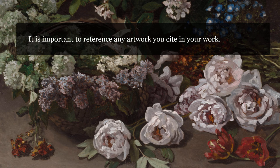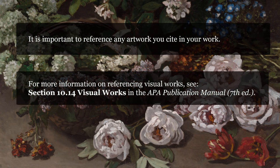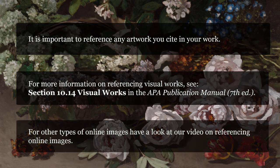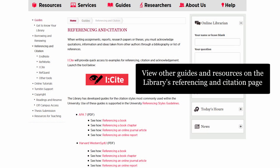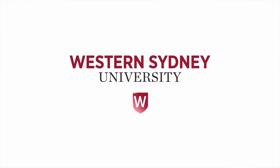It is important to reference any artwork you cite in your work. For more information on referencing visual works, see section 10.14 Visual Works in the APA Publication Manual, 7th edition. For other types of online images, have a look at our video on referencing online images. View other guides and resources on the library's referencing and citation page, or please contact the library.